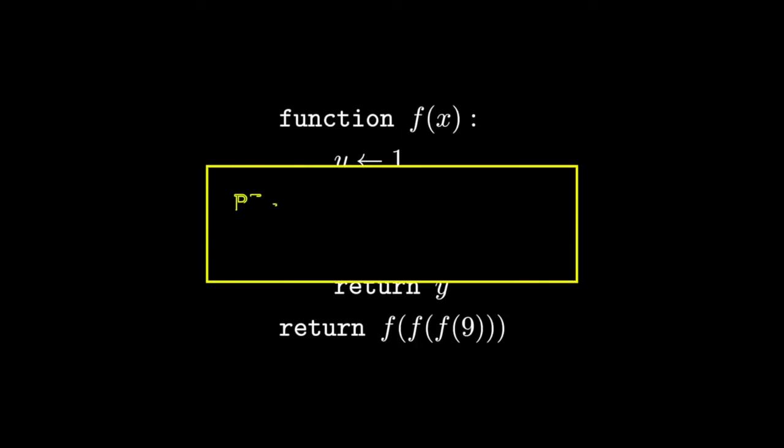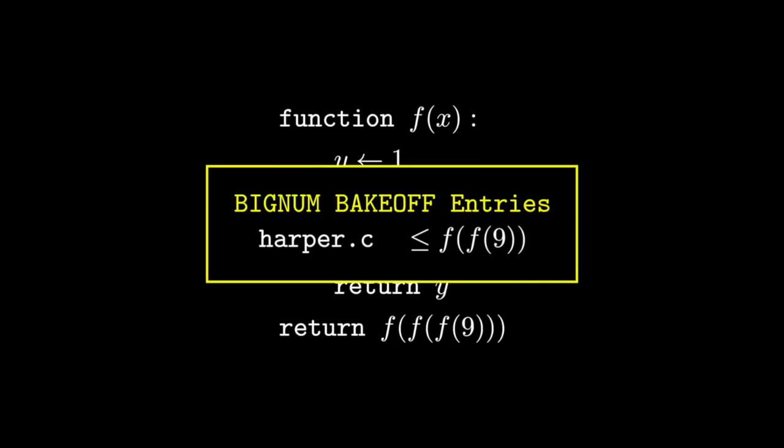One of the entries, harper.c, uses a bunch of recursive function calls to ensure that the program does a lot of computation. David Moyes analyzes this program and shows that the number it returns is smaller than f(9).